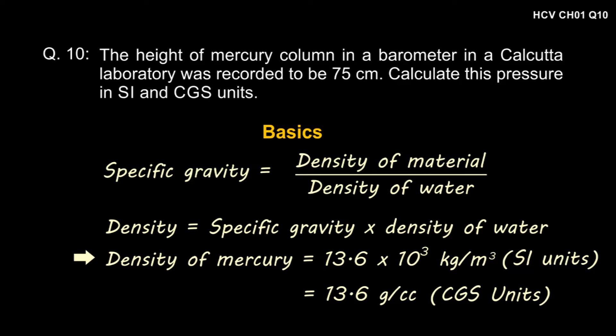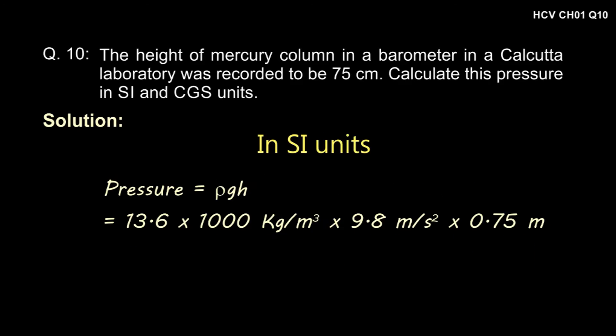Thus the density of mercury is 13.6 into 10 to the power 3 kg per meter cube, which is 13.6 gram per cc in CGS units. Now pressure is rho gh, that is 13.6 into 1000 kg per meter cube